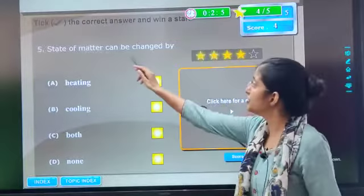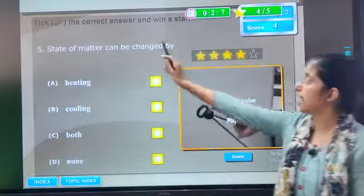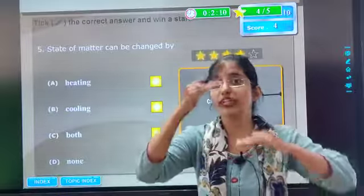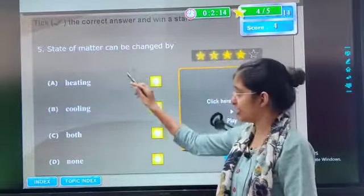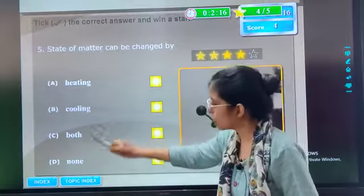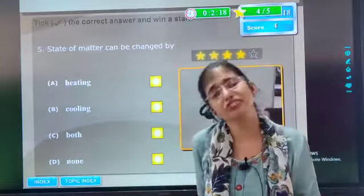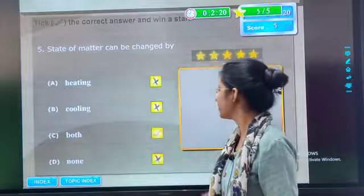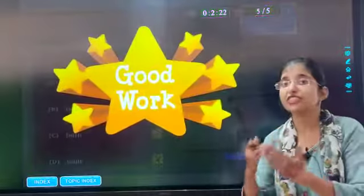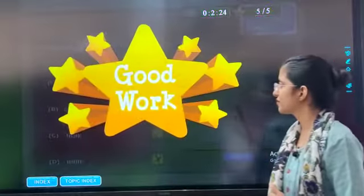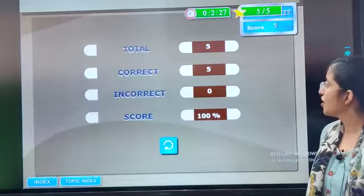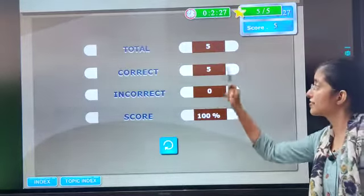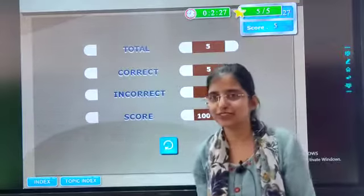Now the next question. States of matter can be changed by - state of matter means solid to liquid to gas, right? So this can be changed by heating, cooling, both or none? The answer is both. By both we can change the state of matter. Then let's see. Okay. So the sign is correct. In fact, a big zero. And our score is 100%.